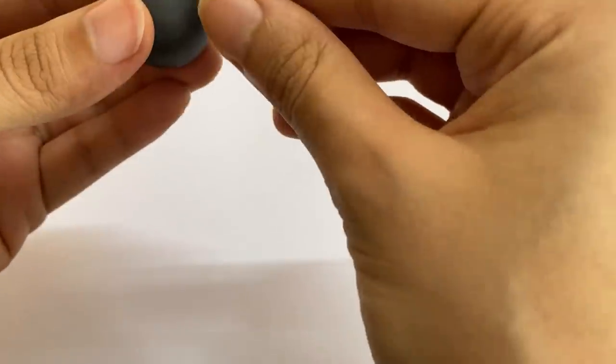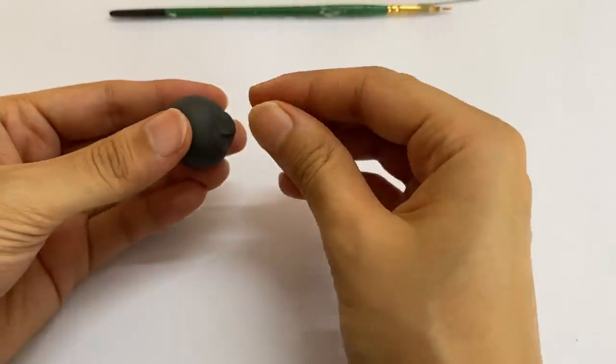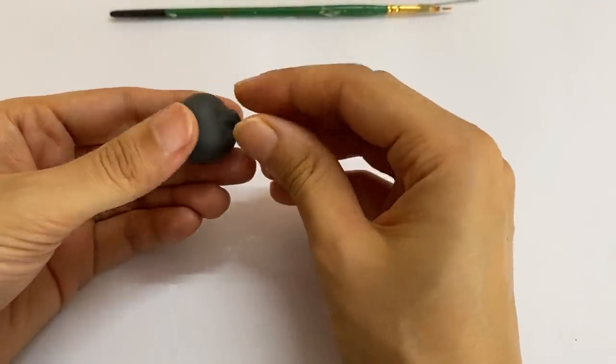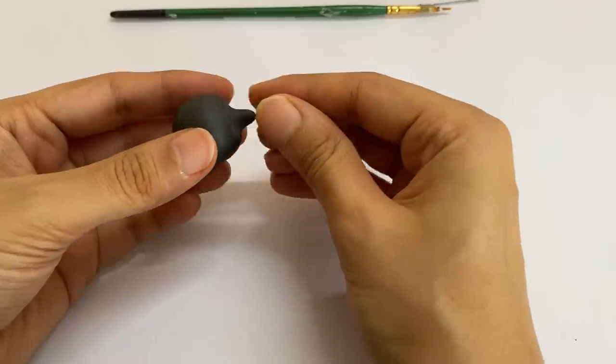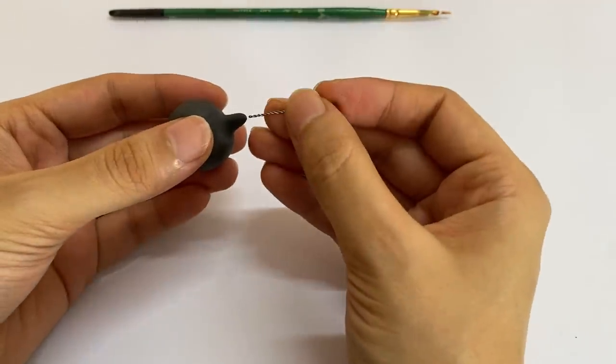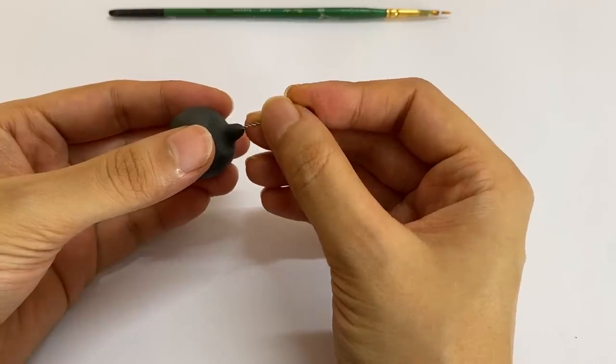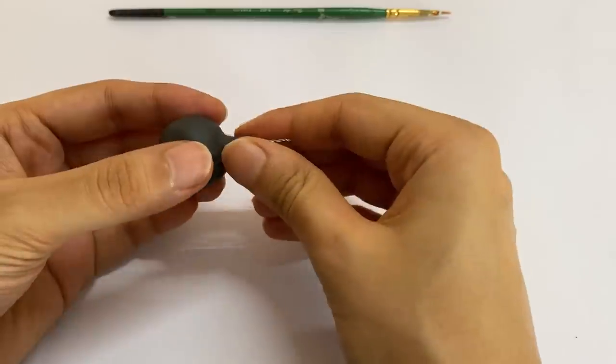I usually start by sculpting the beak of the bird. In order to do that, take a little portion from the ball, pinch it with the tips of your finger and try to pull it outwards very gently. Apply equal pressure on all sides. Since the hummingbird has a long and thin beak, I will also be inserting a piece of wire inside.